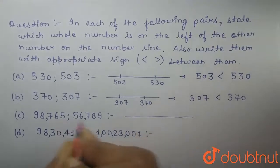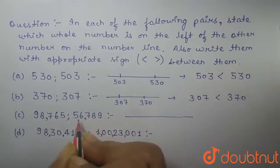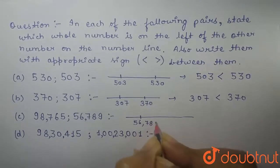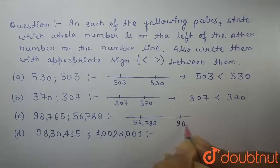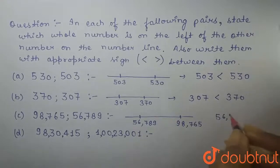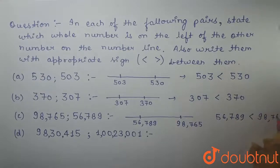If we plot these two numbers, this is 98,765 and this is 56,789. So, 56,789 comes on the left side of 98,765. So, 56,789 is less than 98,765.